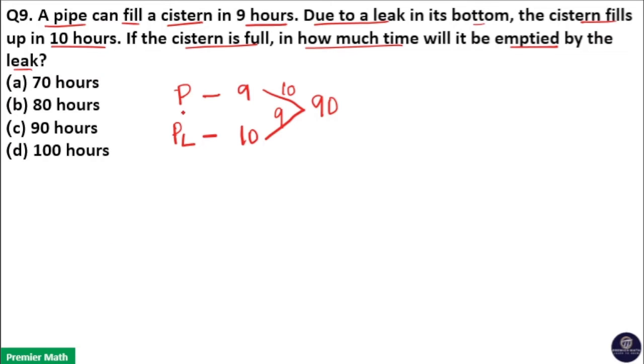Here you can see efficiency of pipe without leak is 10, that is the pipe without leak can fill 10 liters in an hour. And efficiency of pipe with the leak is 9, that is the pipe with leak can fill only 9 liters in an hour.